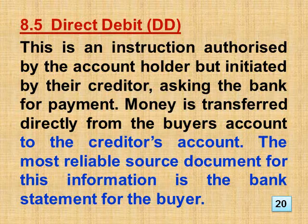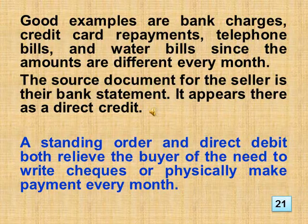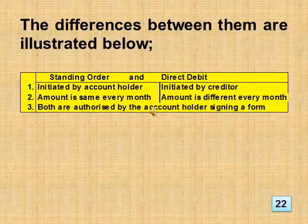Section 8.5: Direct Debit. This is an instruction authorized by the account holder but initiated by their creditor, asking the bank for payment. Money is transferred directly from the buyer's account to the creditor's account. The most reliable source document for this information is the bank statement for the buyer. Good examples are bank charges, credit card repayments, telephone bills, and water bills, since the amounts are different every month. The source document for the seller is their bank statement, where it appears as a direct credit. A standing order and direct debit both relieve the buyer of the need to write cheques or physically make payment every month.